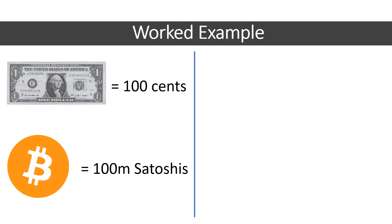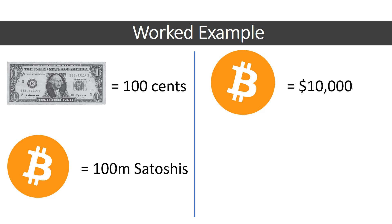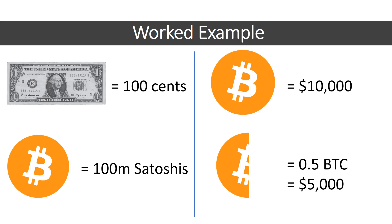To bring even more light to the question: let's say one Bitcoin equals $10,000 USD for argument's sake. If we were to purchase half a Bitcoin, that would be 0.5 BTC, which would be equivalent to $5,000 USD in our example.